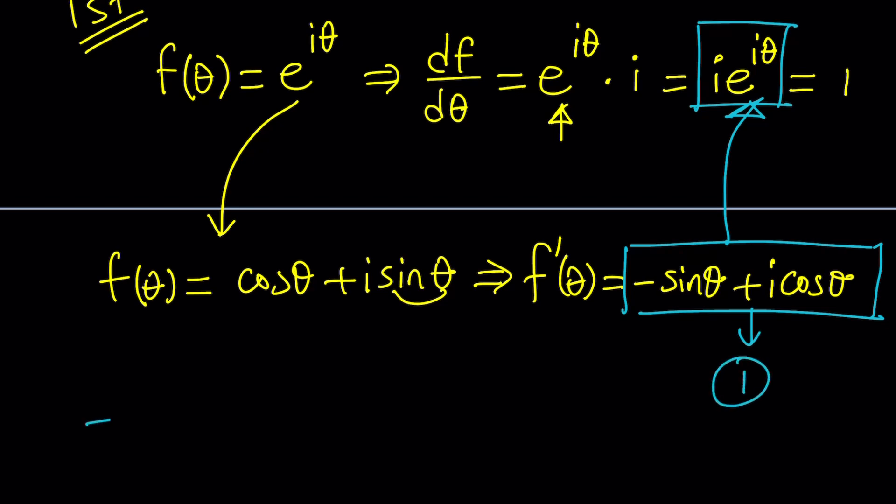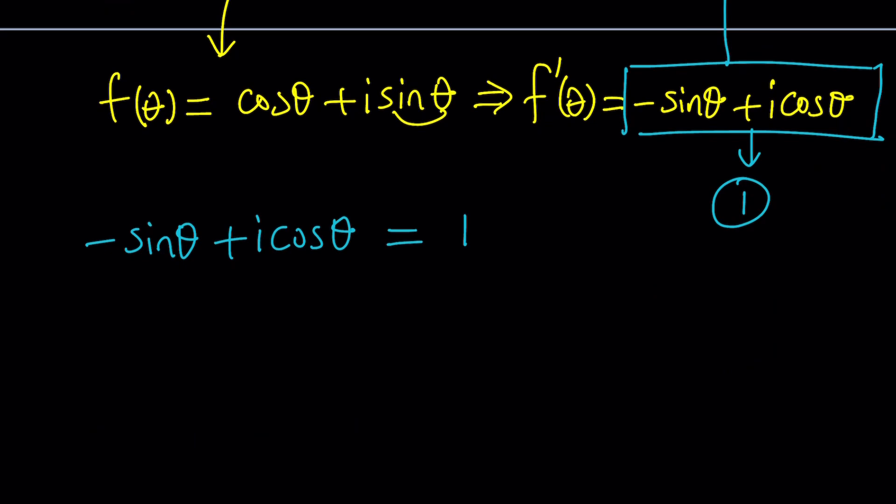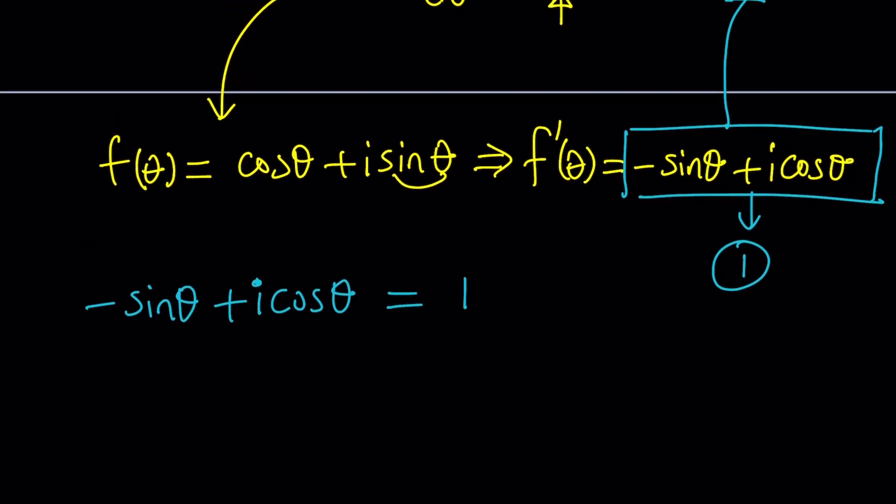If those two things are equal, then this is also equal to 1. That's the result I'm getting, negative sine θ plus i cosine θ. I hope this was clear. This is my equation now. I got rid of the i, and I'm going to show you an alternative method. We're going to do at least two methods.